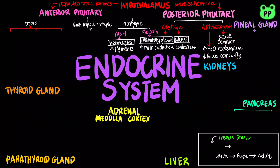Tropic hormones regulate the function of endocrine cells or glands. Growth hormone has both tropic and non-tropic actions. It stimulates the production of growth factors in the liver, bones, and many other organs. An excess of growth hormone can cause gigantism, while a lack of growth hormone can cause dwarfism.